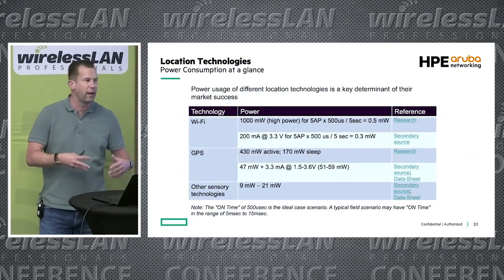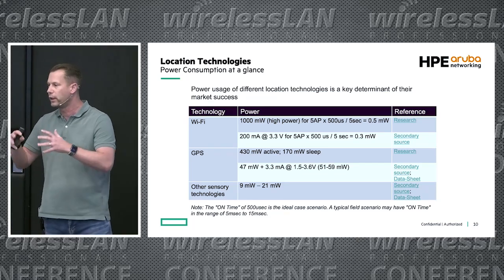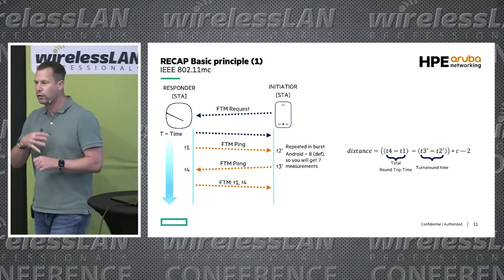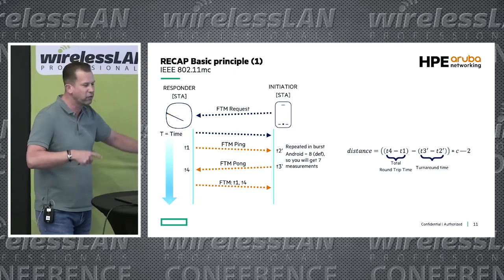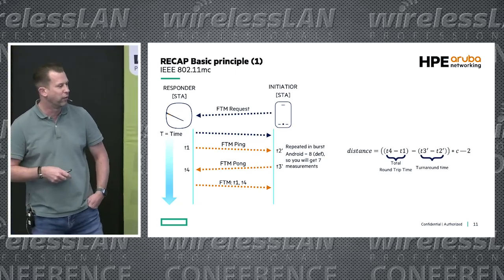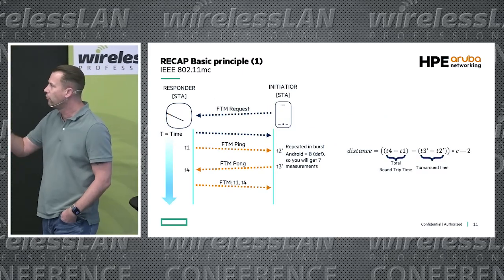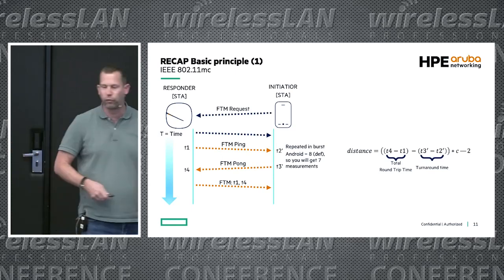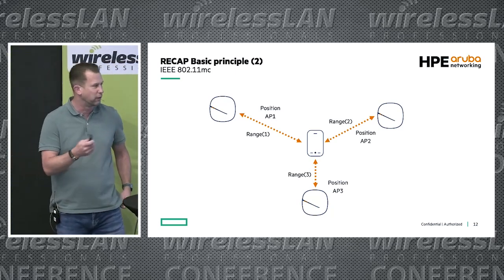The Wi-Fi Alliance has also done some power comparison work, which is a bit Wi-Fi-optimized, but power is an important consideration when doing locationing with mobile devices. Recapping the basic principles: you have the initiator station and the responder — the AP in this case. You send an FTM request, exchange messages, and do a calculation: total round-trip time minus turnaround time, divided by two, times the speed of light. The burst on Android is eight by default, giving you multiple calculations so the client gets a better average. You do this to multiple APs, and from there the client can do its position calculation.